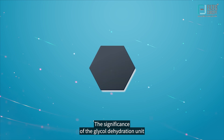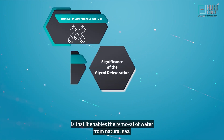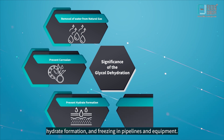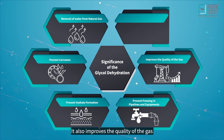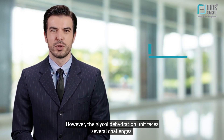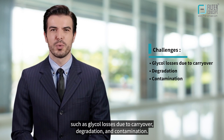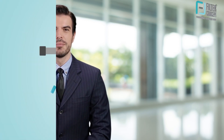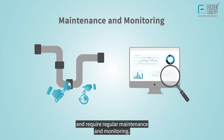The significance of the glycol dehydration unit is that it enables the removal of water from natural gas, which is essential to prevent corrosion, hydrate formation, and freezing in pipelines and equipment. It also improves the quality of the gas and increases its market value. However, the glycol dehydration unit faces several challenges, such as glycol losses due to carryover, degradation, and contamination, which can affect the unit's efficiency and require regular maintenance and monitoring.